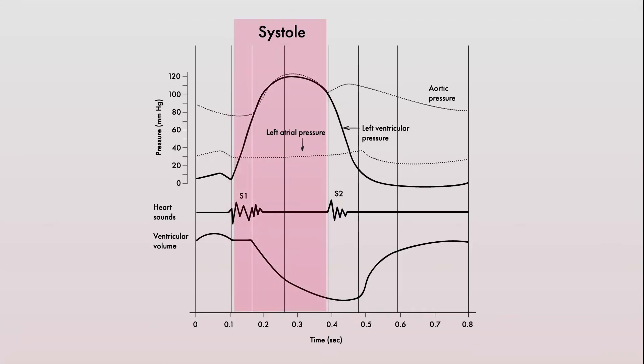Systole is marked by the closure of the atrioventricular valves, along with the S1 heart sound produced from the closure of those valves.